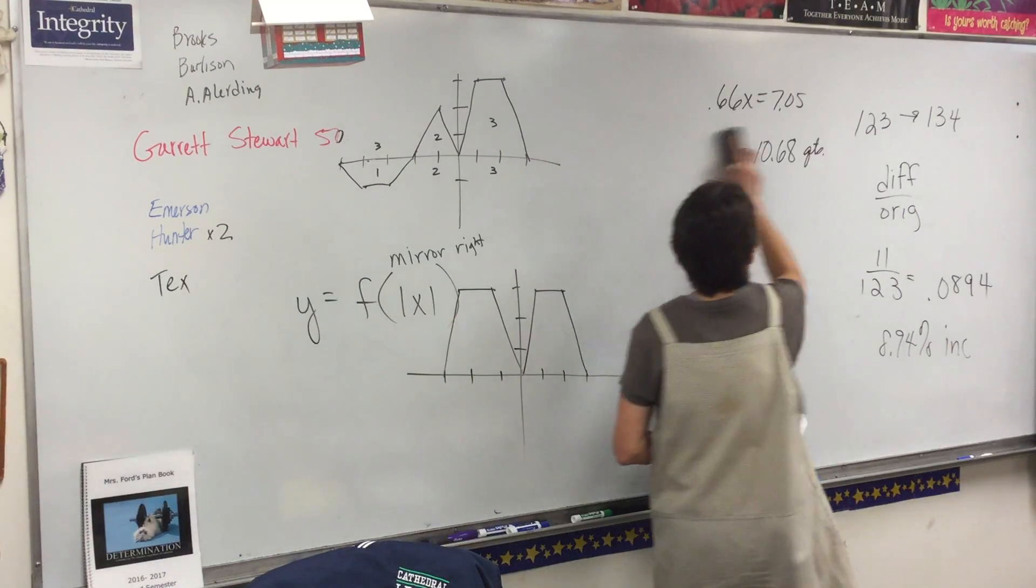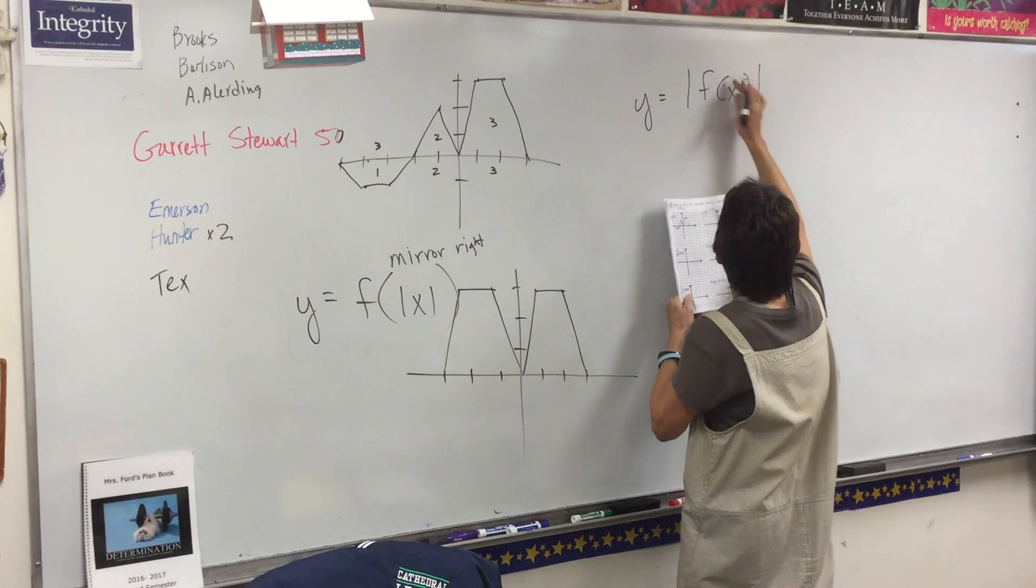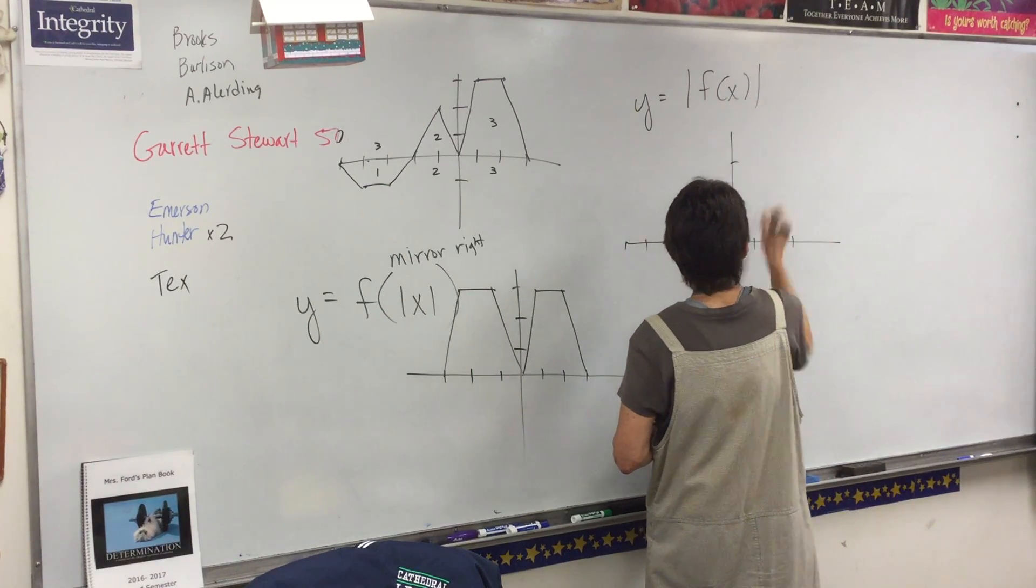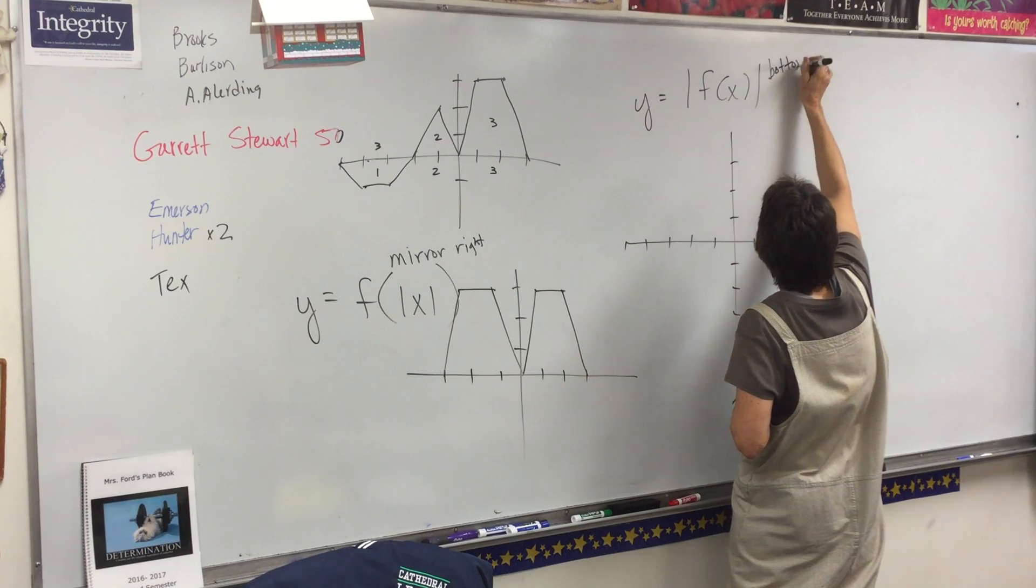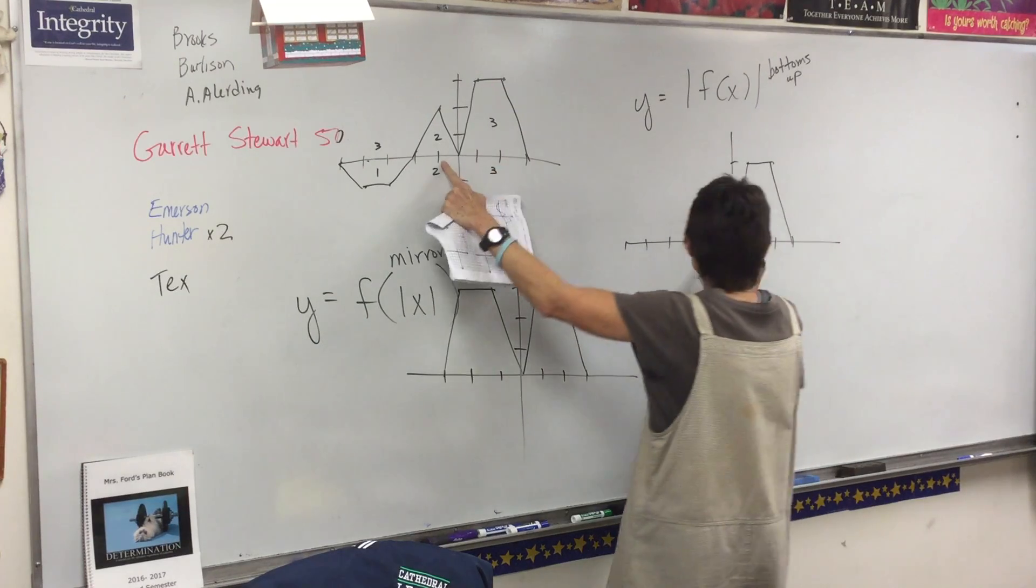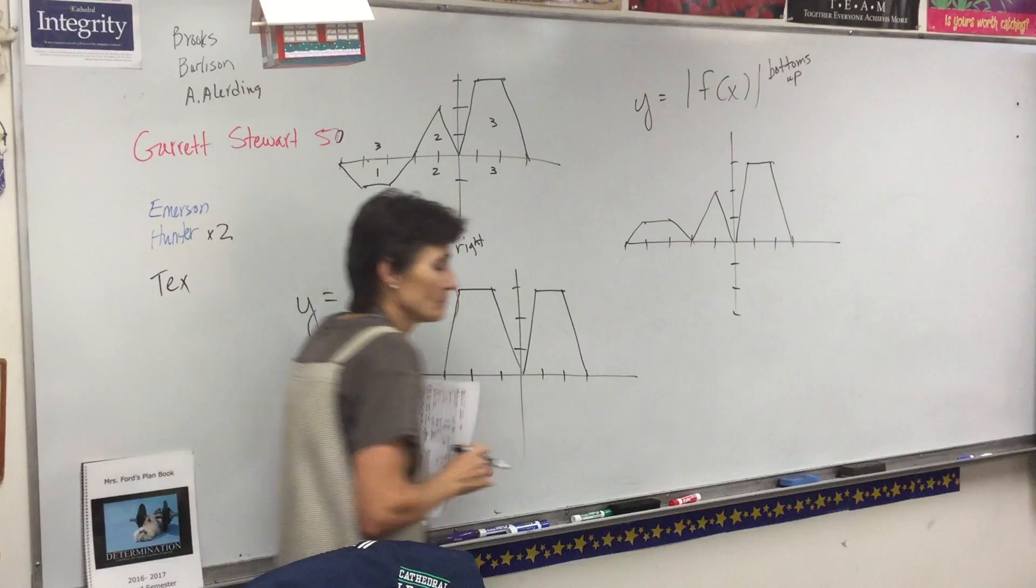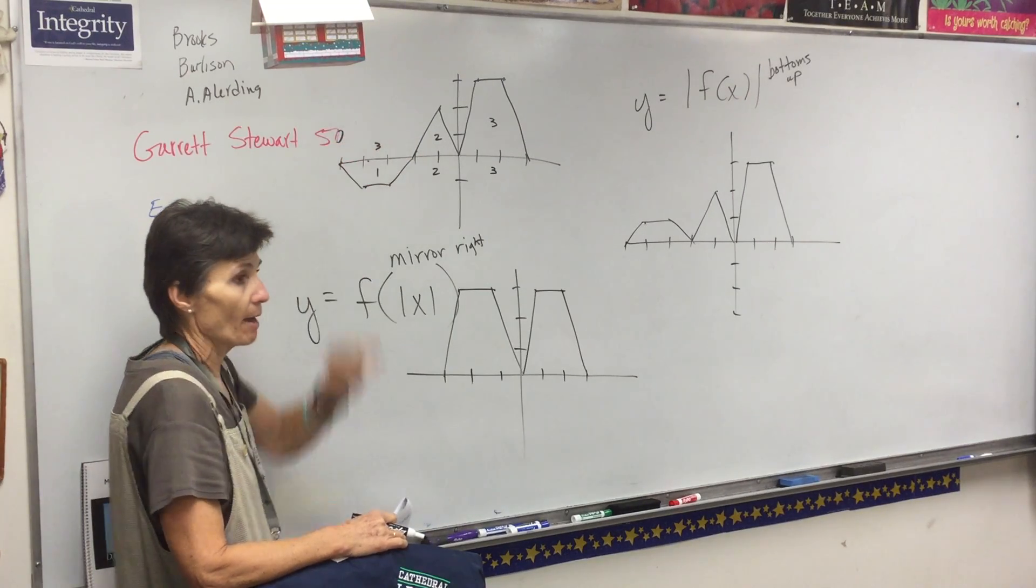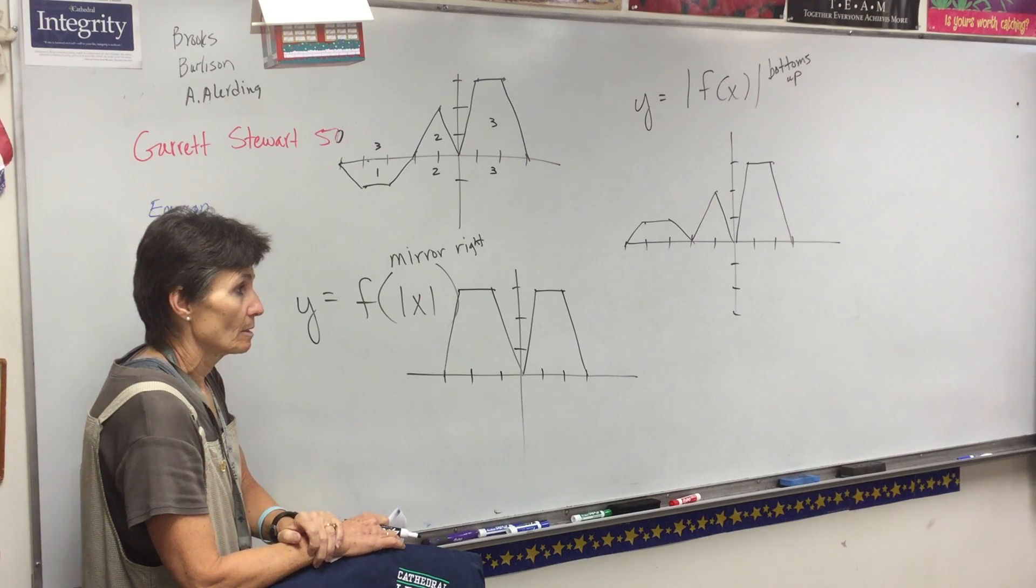Now look at B. B is an absolute value but it's a different kind of absolute value. B is the absolute value of the whole thing, of the Y, the whole shebang there. What does that do? That's the bottoms up one. Everything on the bottom comes up. So the trapezoid is already up, the triangle is already up, but the baby trapezoid has to come up. So the only change is whatever we have on the bottom is going to come up to the top.